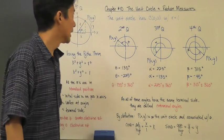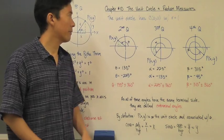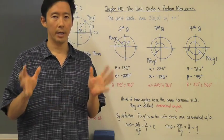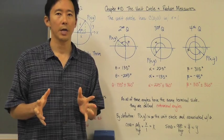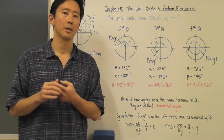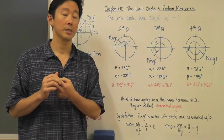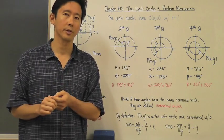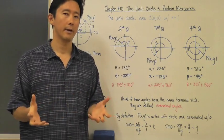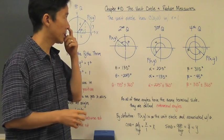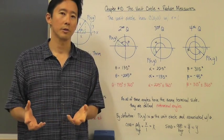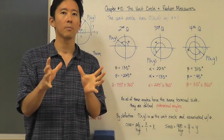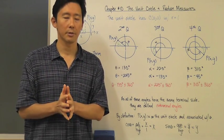Hello everyone. Now that we have an idea of what a radian is, and we know that we can measure angles in two ways — using degrees, which is an angular measure, or radians, which is a linear measure — we need to move forward and see how this all relates to the unit circle and how the unit circle is the fundamental starting point for trigonometry.